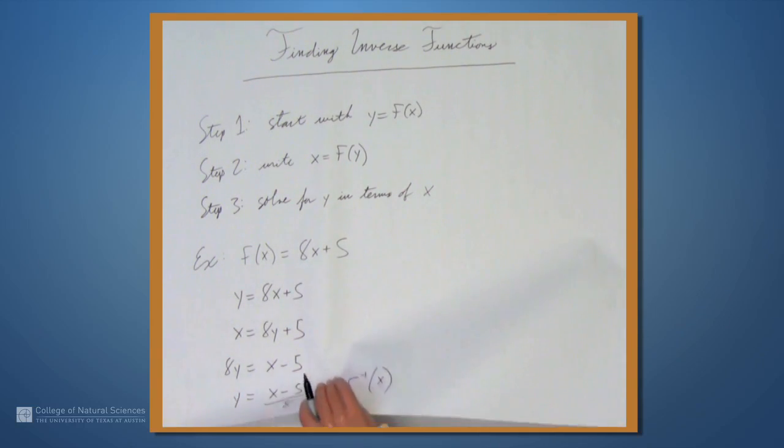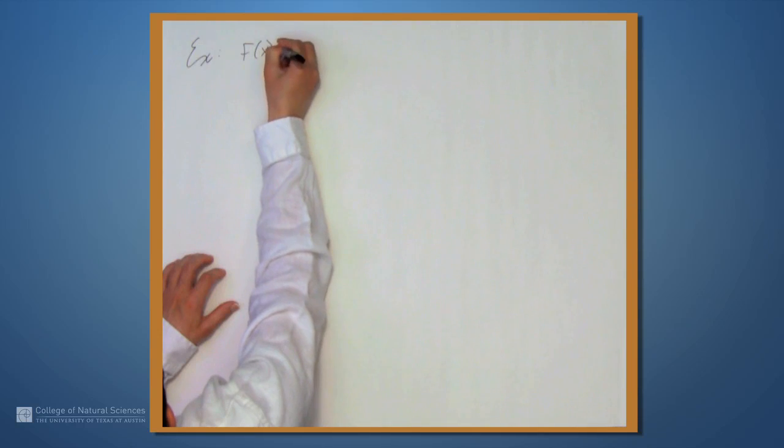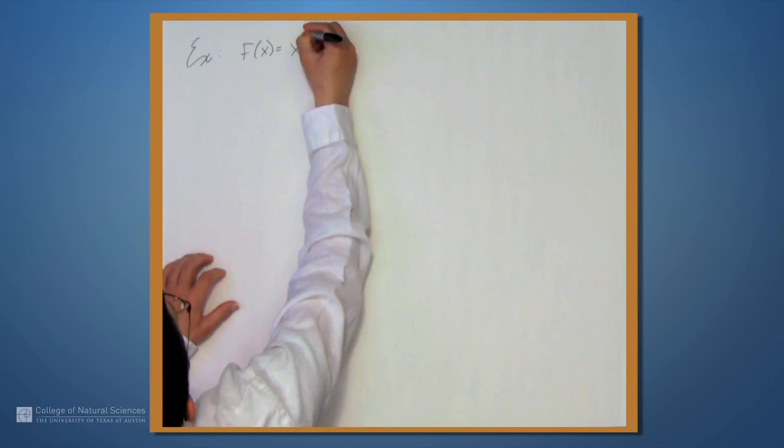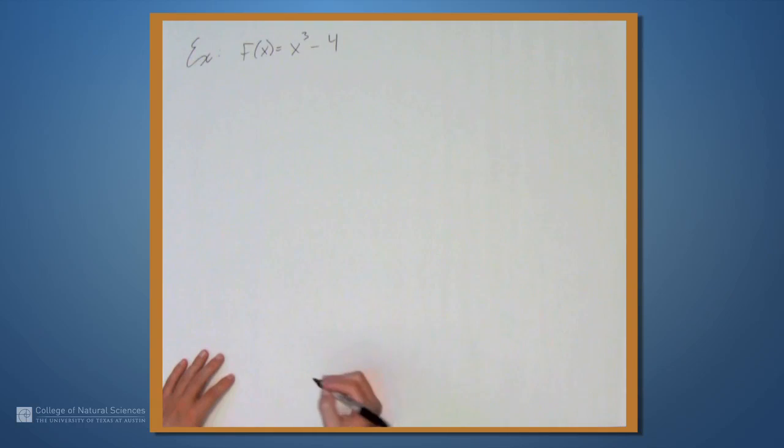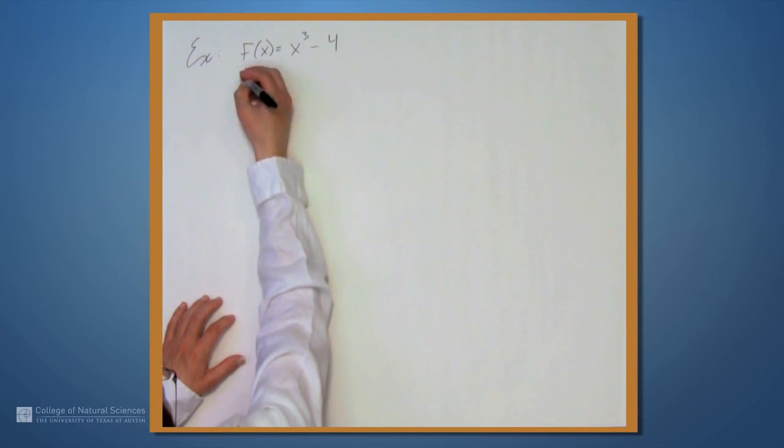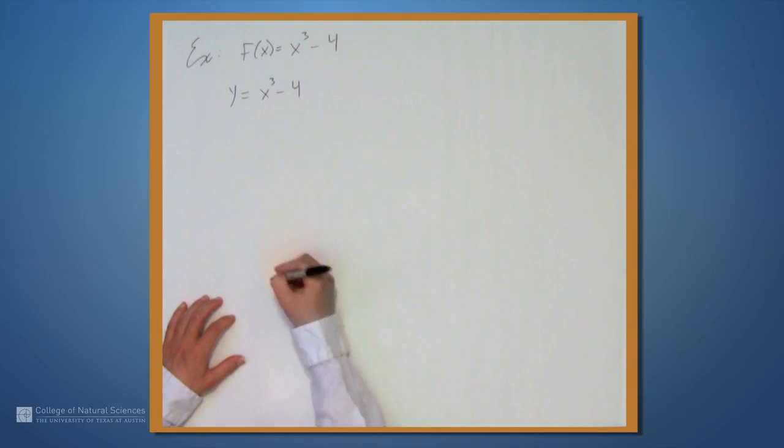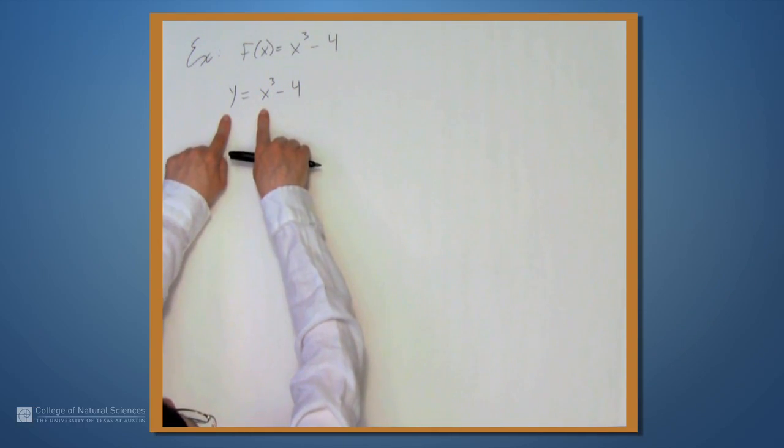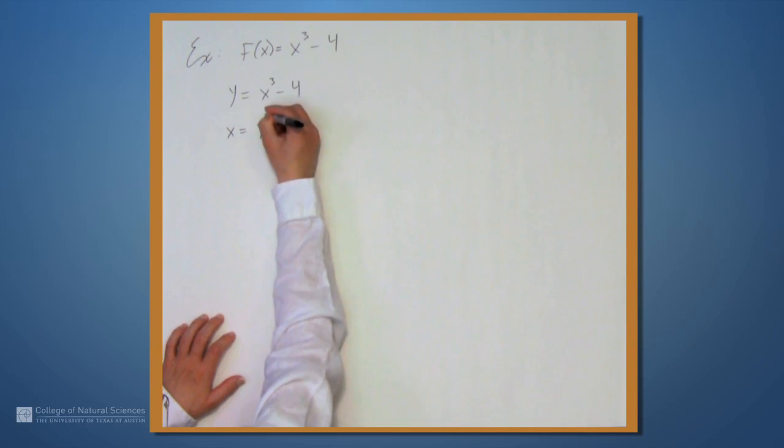Let's look at one more example. Something a bit more complicated. f(x) equals x cubed minus 4. Well, we go through the same process. We're going to write y equals x cubed minus 4. Switch the places of x and y, so we get x equals y cubed minus 4.